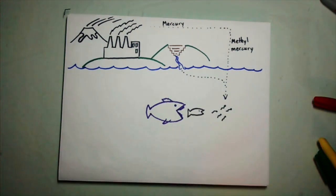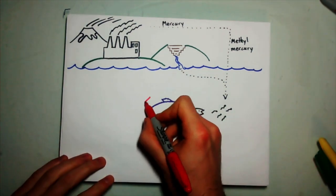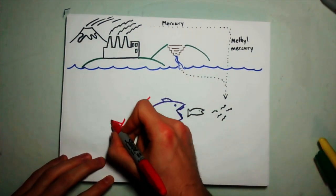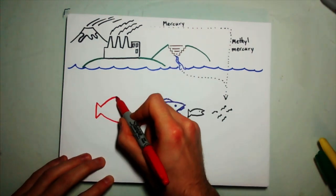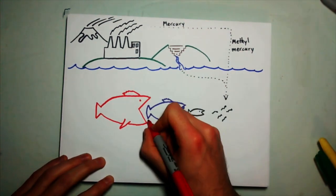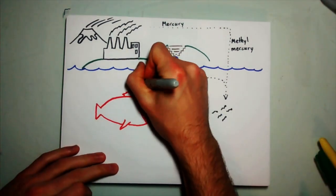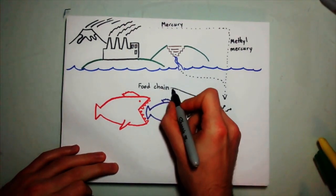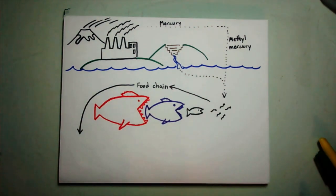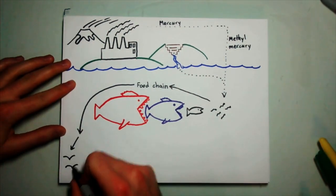Methylmercury starts to accumulate into primary producers like phytoplankton. It then travels up the food chain, becoming more concentrated at each trophic level. Top predatory species like shark, pike, and halibut have high concentrations of methylmercury. Also, predatory mammals and bird species suffer from high methylmercury concentrations from eating fish.